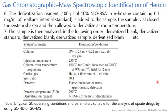Table 1 provides typical GC operating conditions and parameters for analysis of opiate drugs by GC-FID or GC-MS. The first column is OV-1 having 25 metre length, 0.22 mm internal diameter, and particle size of 0.5 micron. Injection temperature is about 250°C. Column temperature starts at 150°C for 2 minutes and increases to 280°C at 9°C per minute, held for 2 minutes. Carrier gas is helium at a flow rate of 1 ml per minute. Split ratio is 50:1.